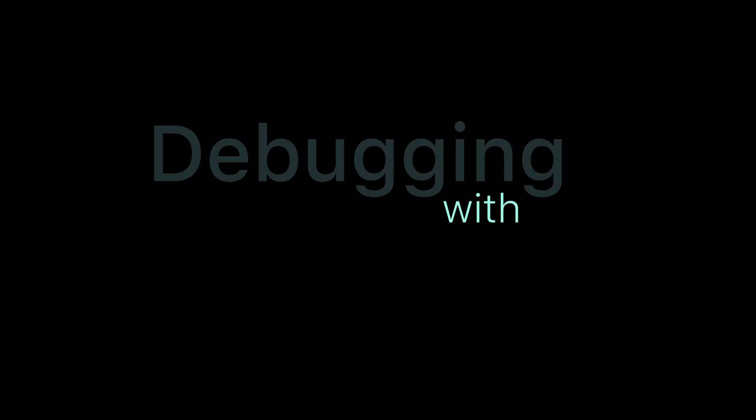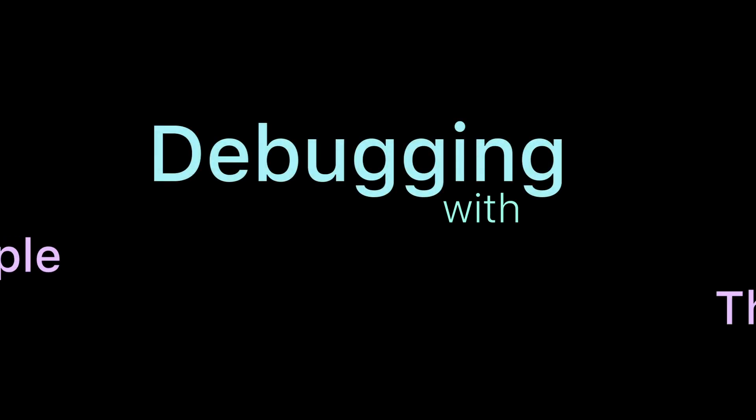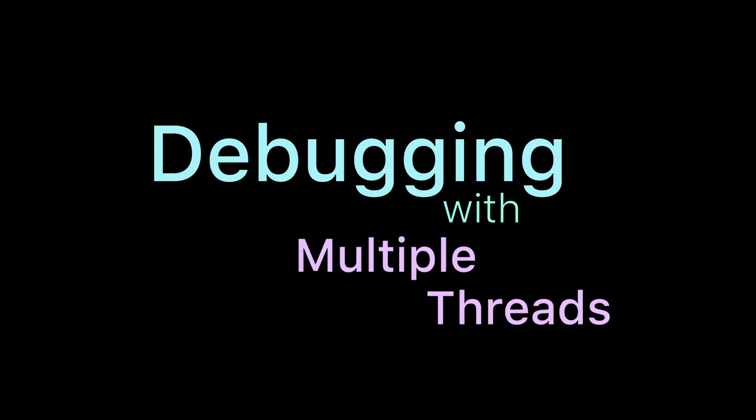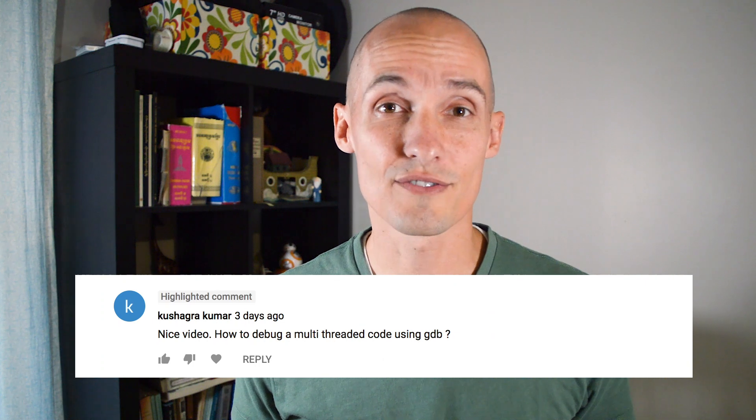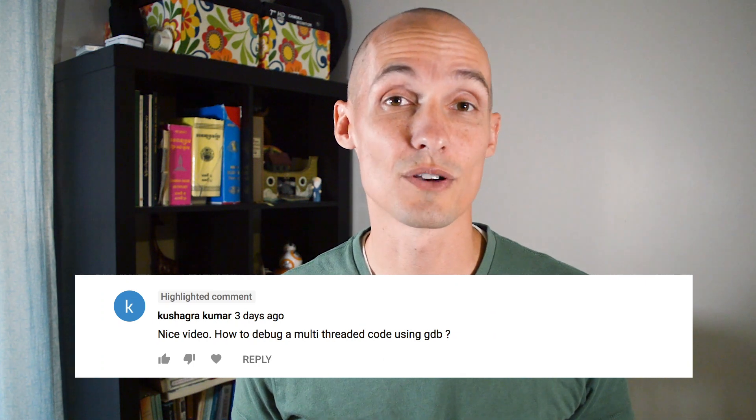Let's do some debugging today. Students often have trouble debugging their programs, but things can get especially difficult when we have multiple threads involved. Lately I've been talking a lot about threads — creating threads, manipulating threads, multi-threaded programming — and some of you have asked for help with debugging these programs, so today we'll look at how to debug a multi-threaded program.